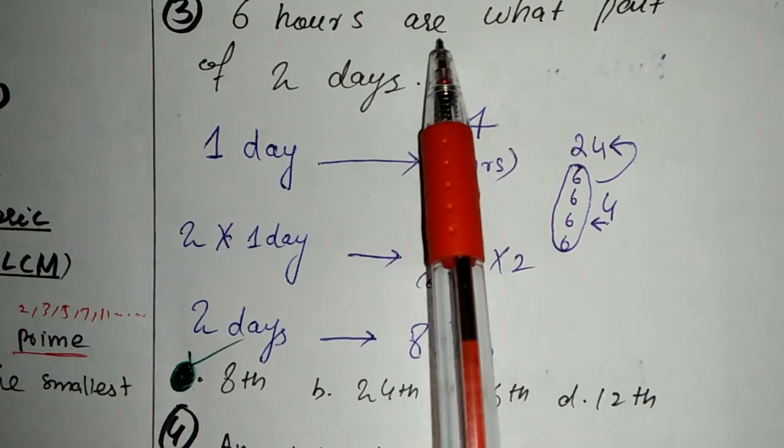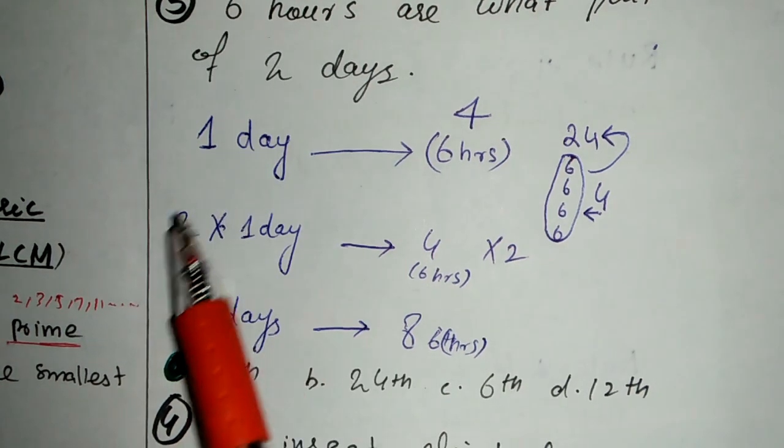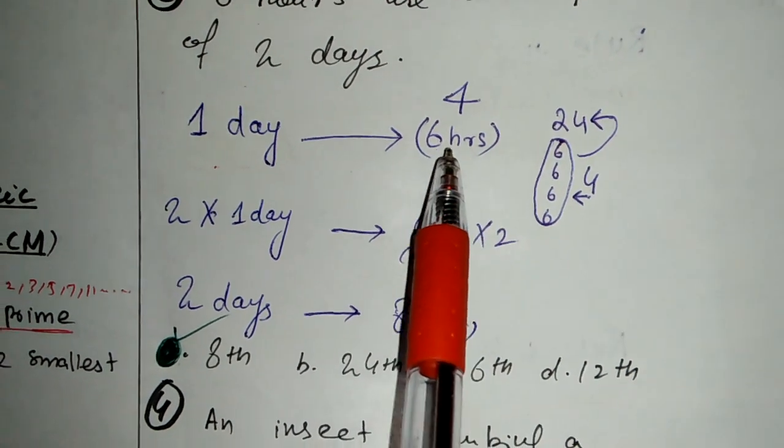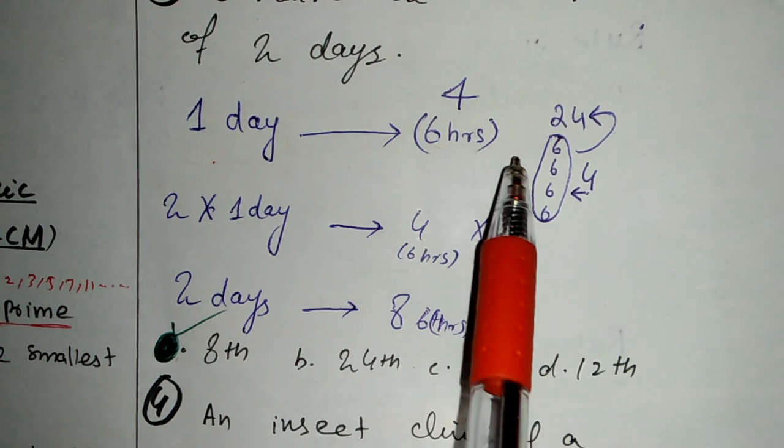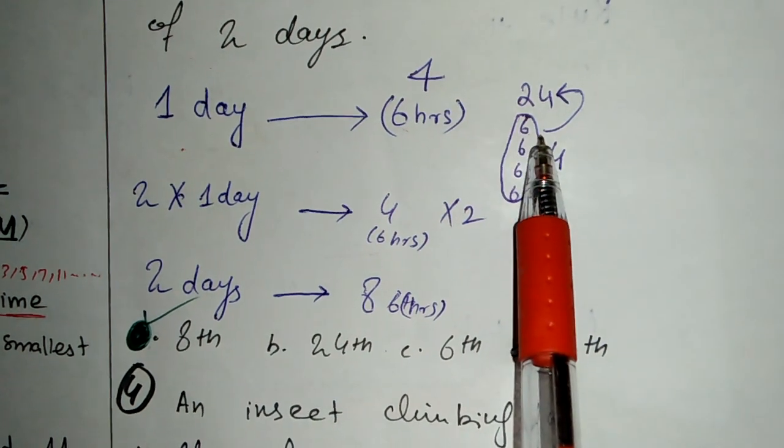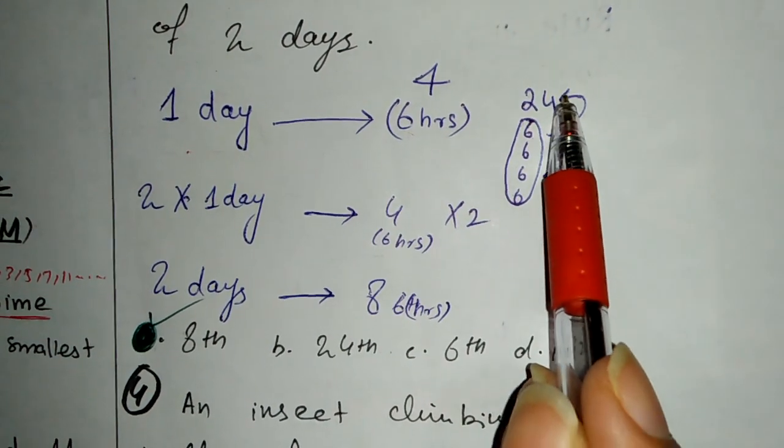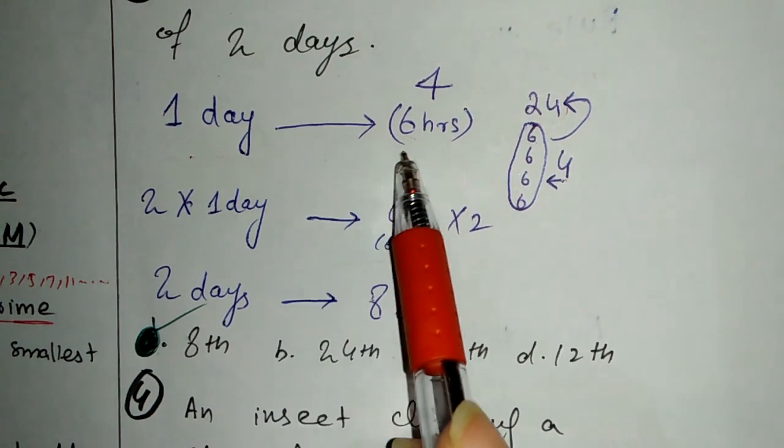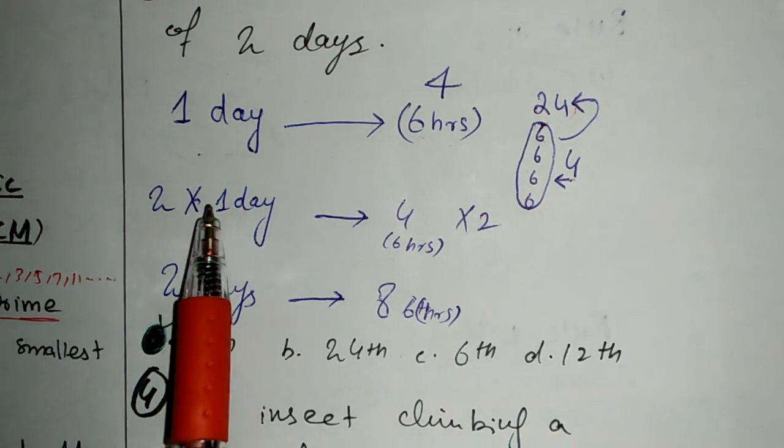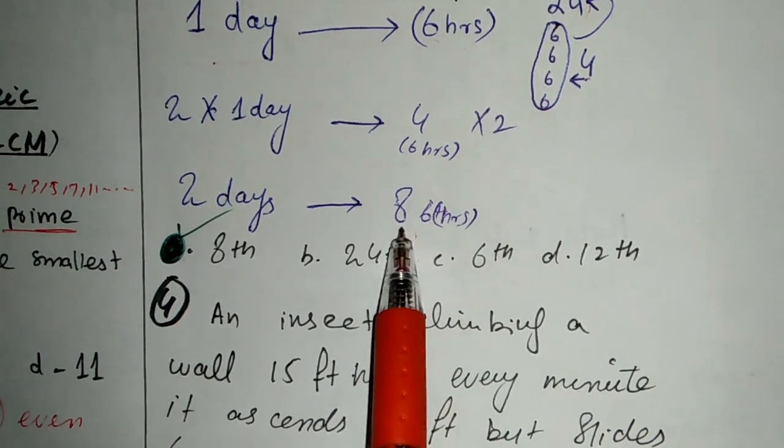Next example: 6 hours is which part of 2 days? One day has 24 hours. 6 hours of 24 hours is 1/4 of one day. For 2 days, we multiply by 2. Two days equals 48 hours, so 6 hours divided by 48 hours equals 1/8.